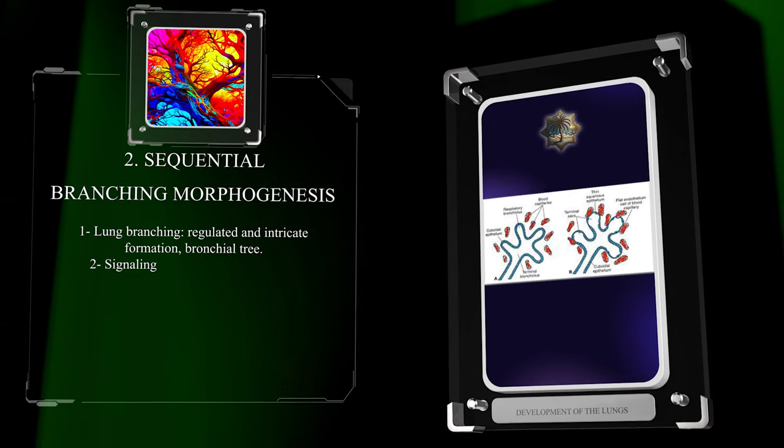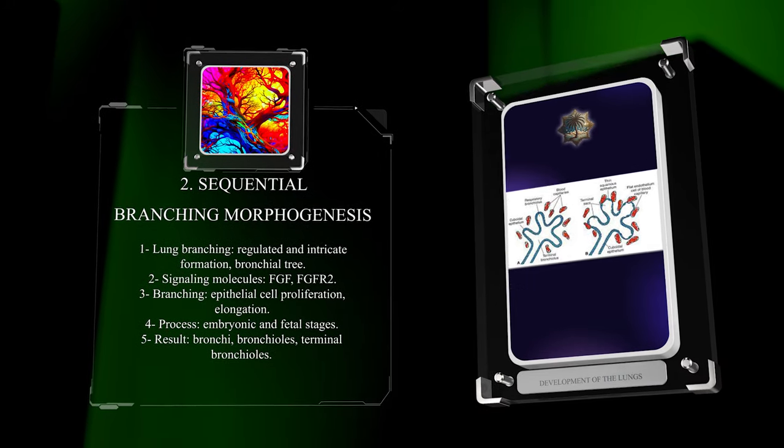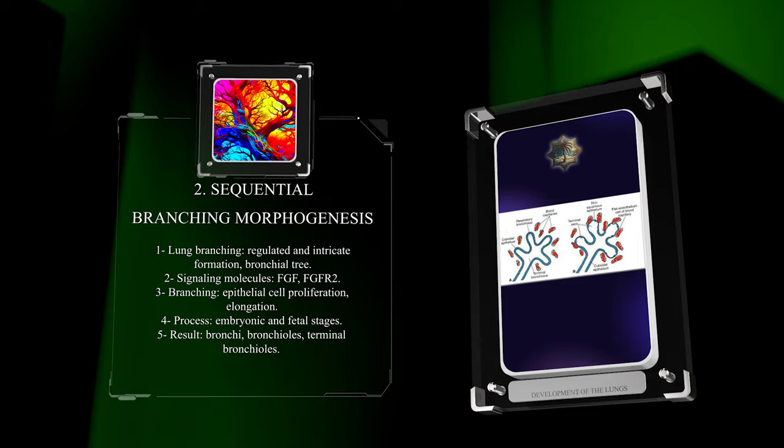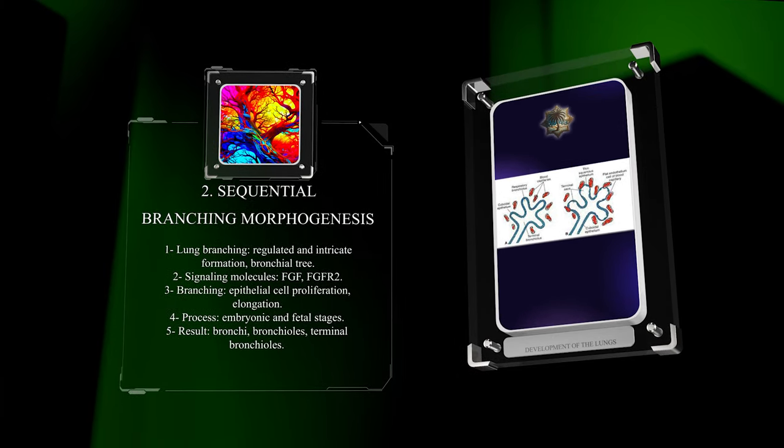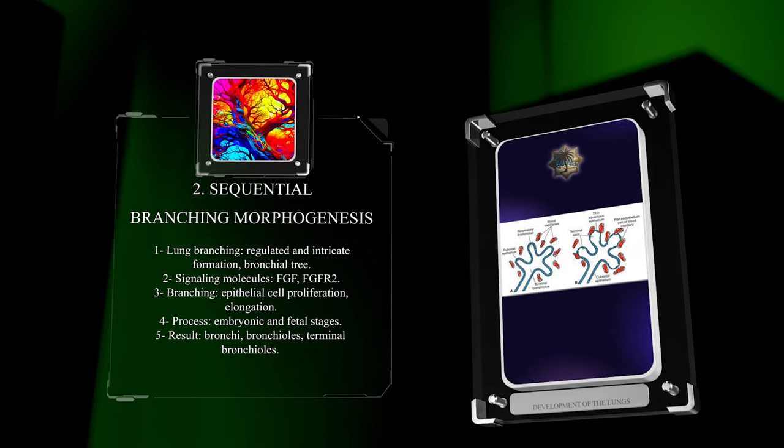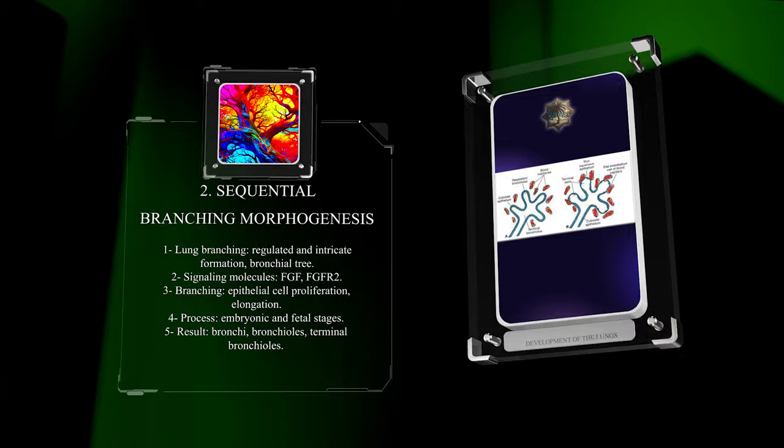The process of lung branching, or morphogenesis, involves the regulated and intricate formation of the bronchial tree. Signaling molecules like FGF and FGFR2 play important roles in promoting branching through epithelial cell proliferation and elongation. This process occurs throughout embryonic and fetal stages, ultimately giving rise to bronchi, bronchioles, and terminal bronchioles.